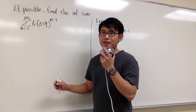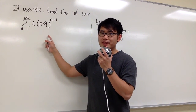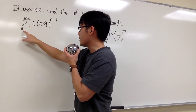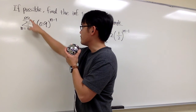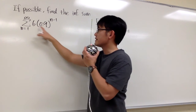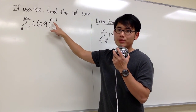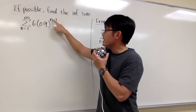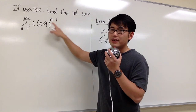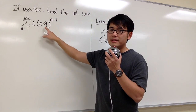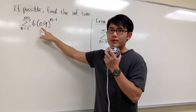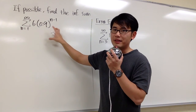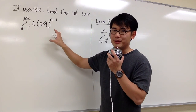If possible, we are going to find the sum for this infinite series. We have the summation from n is equal to 1 to infinity of 6 times 0.9 raised to the n minus 1 power. Notice that the n is in the exponent, and for the base, it's just the number 0.9. Therefore, we know that this is a geometric series.